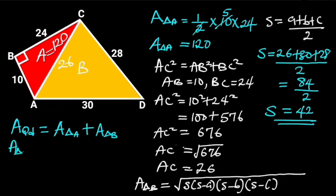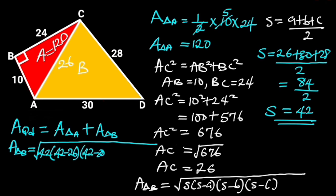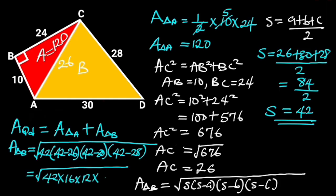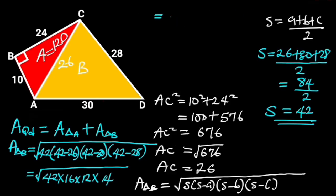The area of triangle B will be the square root of 42 times (42 minus 26) times (42 minus 30) times (42 minus 28). Simplifying this will give us the square root of 42 times 16 times 12 times 14. 42 times 16 times 12 times 14 is 112,896. The square root of 112,896 is equal to 336.